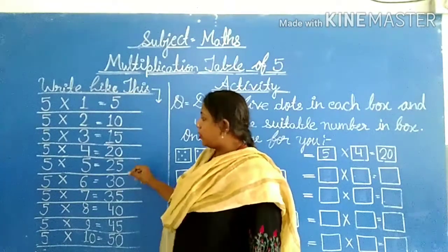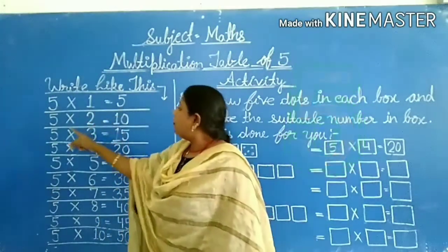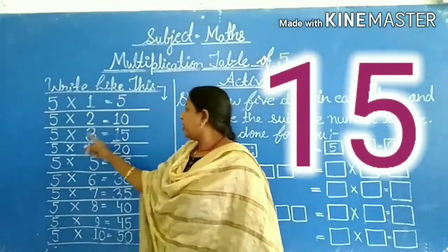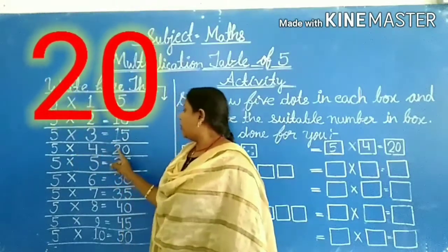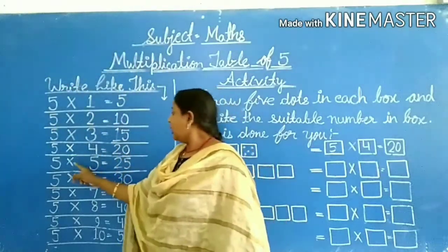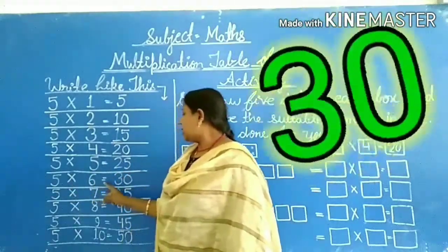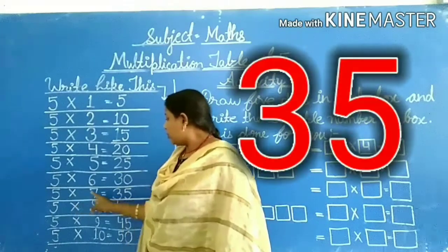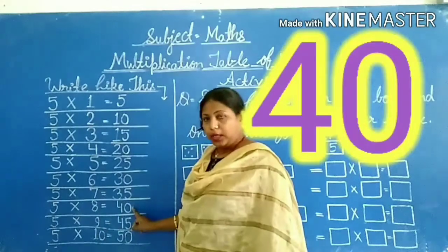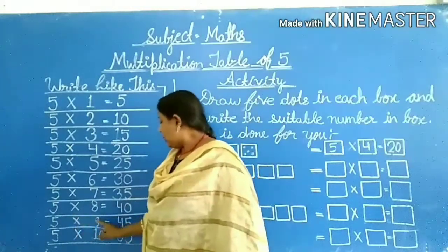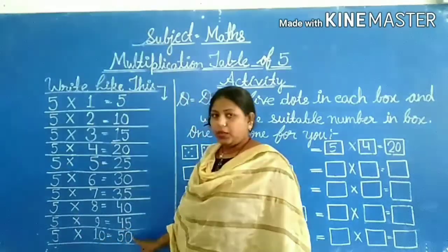5 into 1 equal to 5, 5 into 2 equal to 10, 5 into 3 equal to 15, 5 into 4 equal to 20, 5 into 5 equal to 25, 5 into 6 equal to 30, 5 into 7 equal to 35, 5 into 8 equal to 40, 5 into 9 equal to 45, 5 into 10 equal to 50. Okay children.